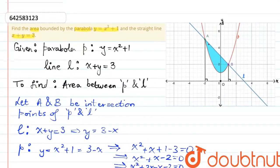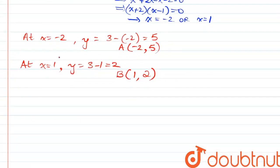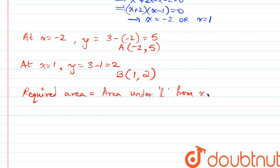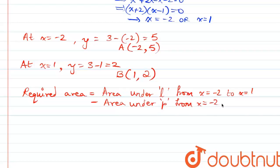Now as we can see from the curve here, the necessary area is the area under the line between x equal to the x-coordinate of A and x equal to the x-coordinate of B, but we must subtract from that the area under the parabola between the same bounds. So the required area equals the area under the line from x equal to negative 2 to x equal to 1, minus the area under the parabola from x equal to negative 2 to x equal to 1.